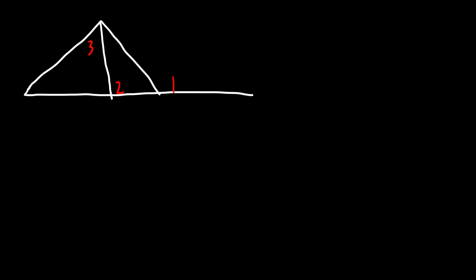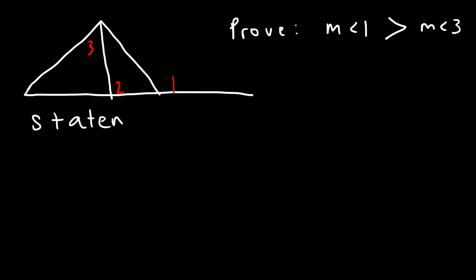So let's work on a problem where we're going to use a two-column proof that uses the exterior angle inequality theorem. Let's call this angle 1, angle 2, and angle 3. Your task is to prove that the measure of angle 1 is greater than the measure of angle 3. Go ahead and try that — feel free to pause the video if you want to work on this problem.